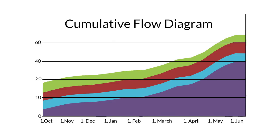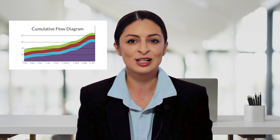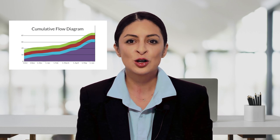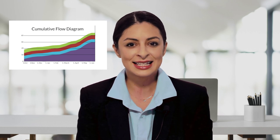Here the areas are all progressing in parallel. If your CFD looks like this, congrats — this is the ideal outcome. Your throughput is consistent, and new and done items are flowing at similar rates. To improve, you can focus your efforts on shortening the cycle times of your tasks.